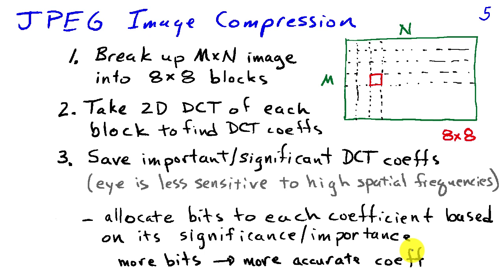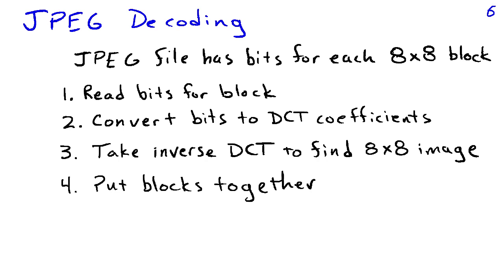So if we've stored our image in the JPEG format, we can decode it for display by reversing the process. So we're going to have the file, there are bits in it, for each of the 8x8 blocks. So we're going to read the bits for that block and then convert those bits to the DCT coefficients for that block.